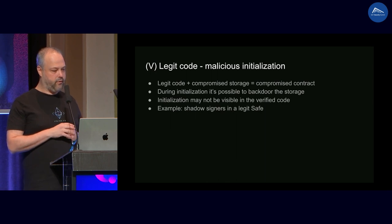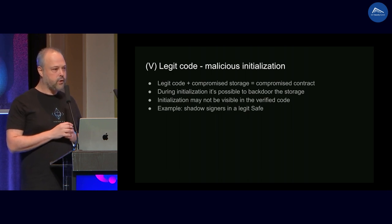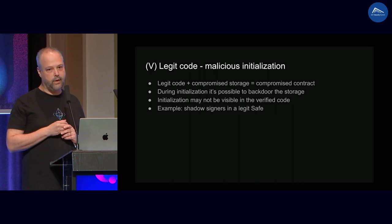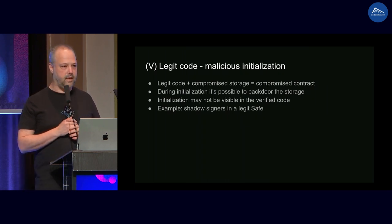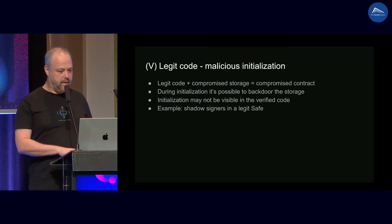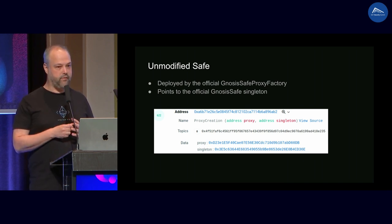Another form of attack is to have 100% legitimate code — not mess with the code in any way — but mess with the storage. A legitimate contract with compromised storage is still a compromised contract. You can compromise storage during initialization, or if there is a delegatecall somewhere in the code, you can do it later. Looking at storage, it's really hard to know what it means because of the way mappings are built in Solidity — you see something in some random slot but don't know what it is until it's actually used. We demonstrate this using Gnosis Safe, deployed using the official proxy factory and official singleton.